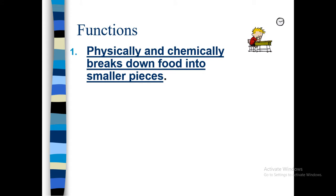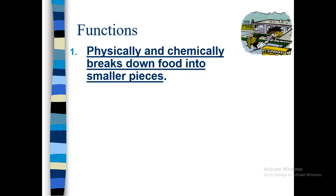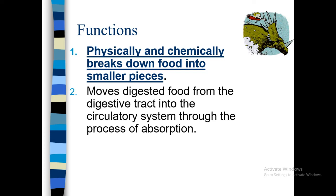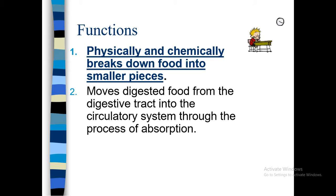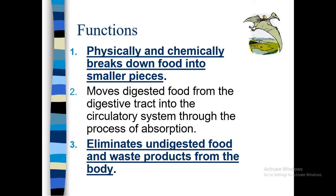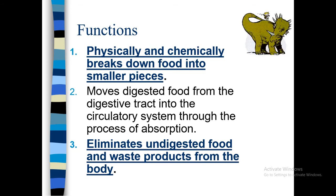Recalling the functions: physical and chemical breakdown of food into smaller pieces is the main function of the digestive system. Next, it moves digested food from the digestive tract into the circulatory system through the process of absorption. Third, after complete digestion, some undigested food is left. The removal of these undigested food and waste products from the body is the last step of digestion.